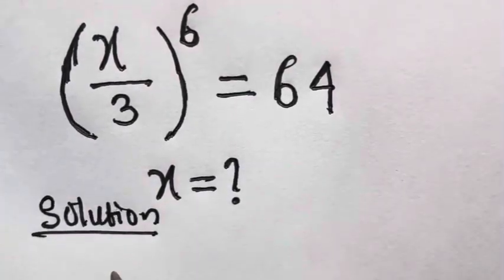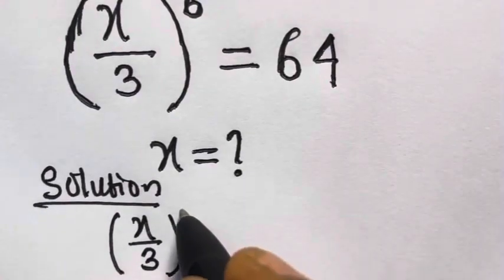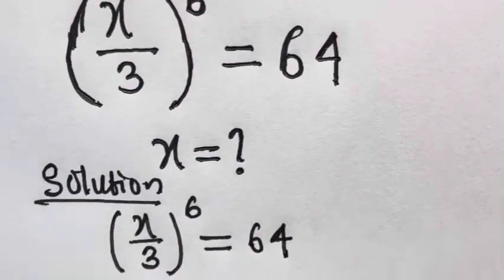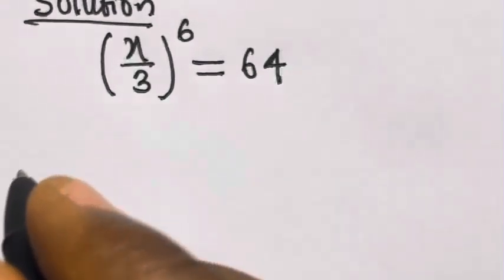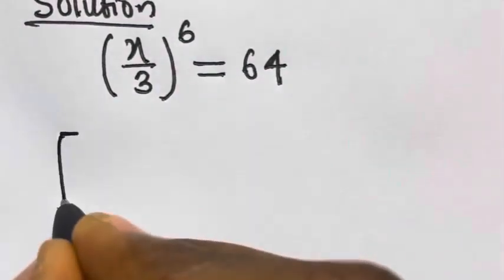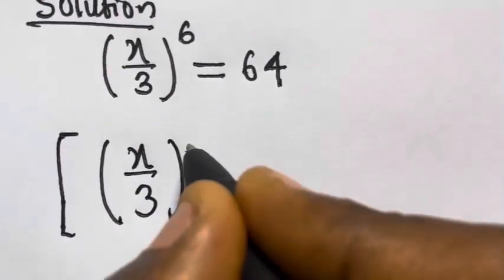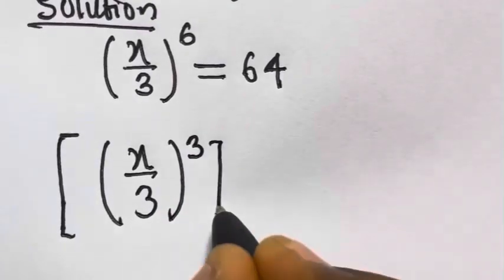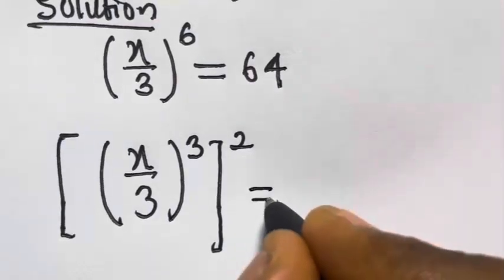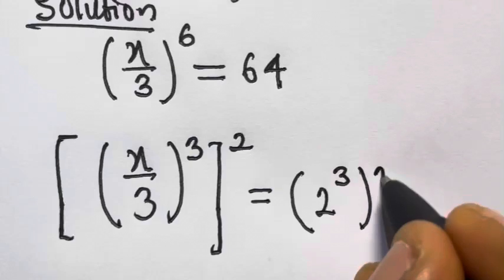We have x divided by 3, raised to the power 6, equals 64. From here, we can break down the power into x divided by 3, raised to the power 3, and we have a square here. So this equals 2 raised to the power 3, raised to the power 2.